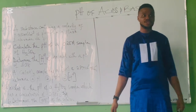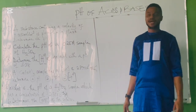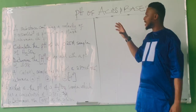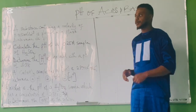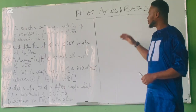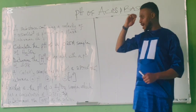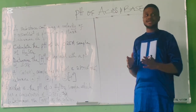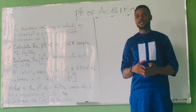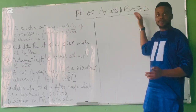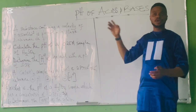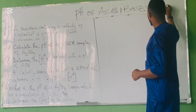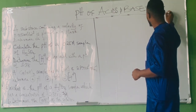We have a series of questions here that illustrates the determination of pH of an acid or a base. Basically, we know that acids are substances that produce hydrogen ions as the only positive charged particle in aqueous solution, while a base is a substance that produces OH⁻ (hydroxyl ions).